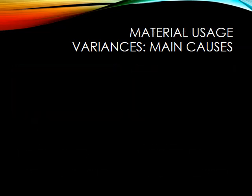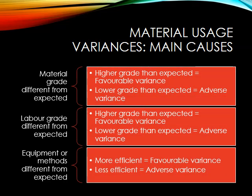So let's now consider why material usage variances arise. There are three main reasons. First of all the materials that we are using might be different from what had been expected. If we are using a higher grade of materials than expected we should see a favourable variance. If we are using better materials we should hopefully be able to get more out of them because there is going to be less wastage or less rework required. If however we are using lower grade materials then that would probably result in adverse variances.